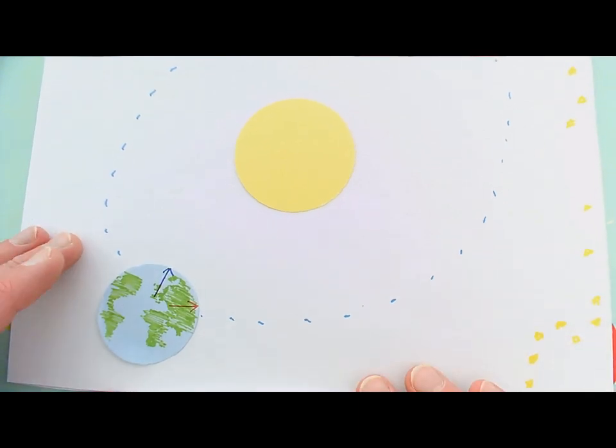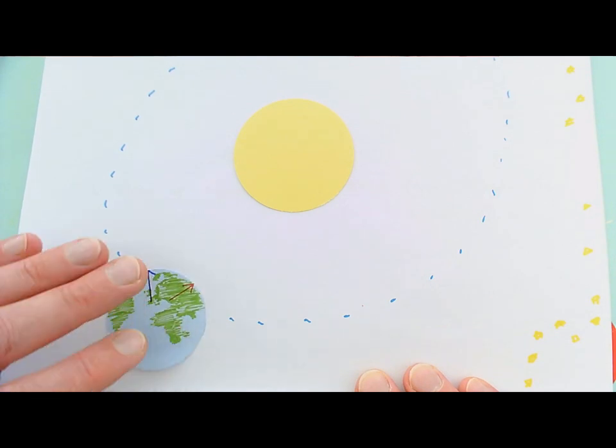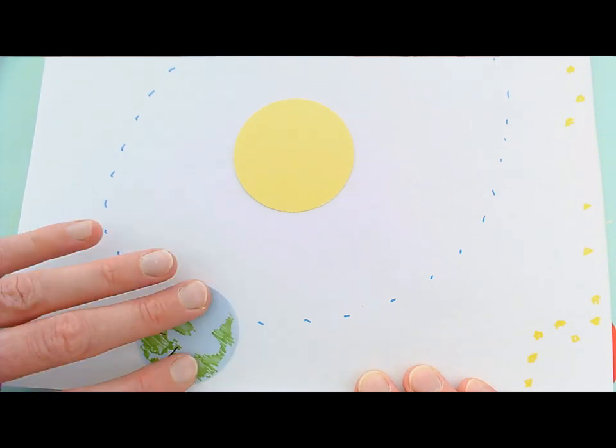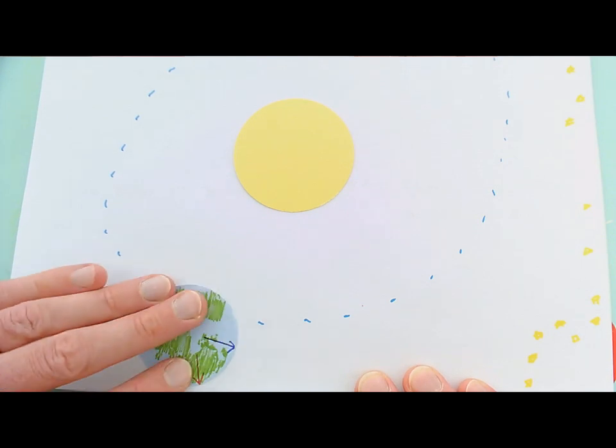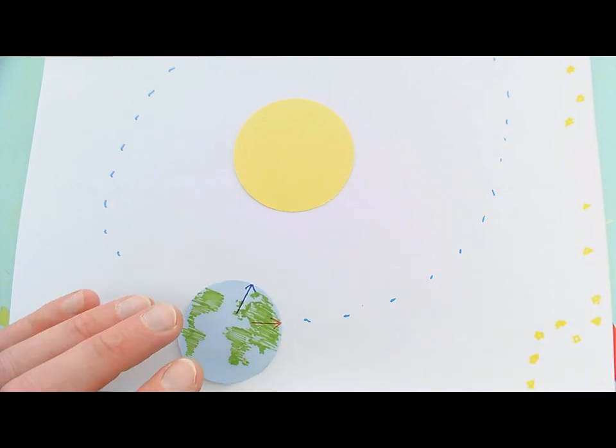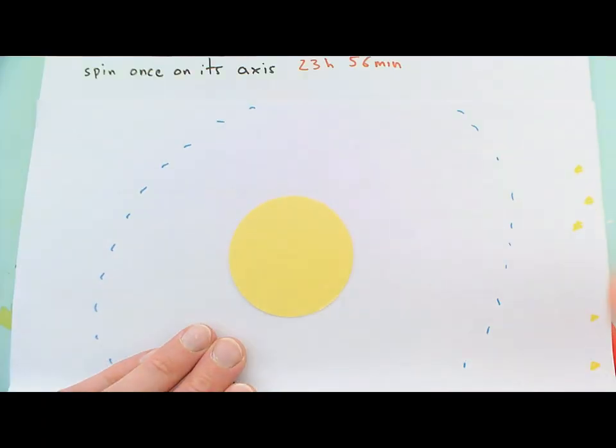If we start to let the earth rotate, here it goes. It actually takes 23 hours and 56 minutes for that person to be facing straight over there again, towards those same distant stars that they were facing the night before. And that's what we call a sidereal day.